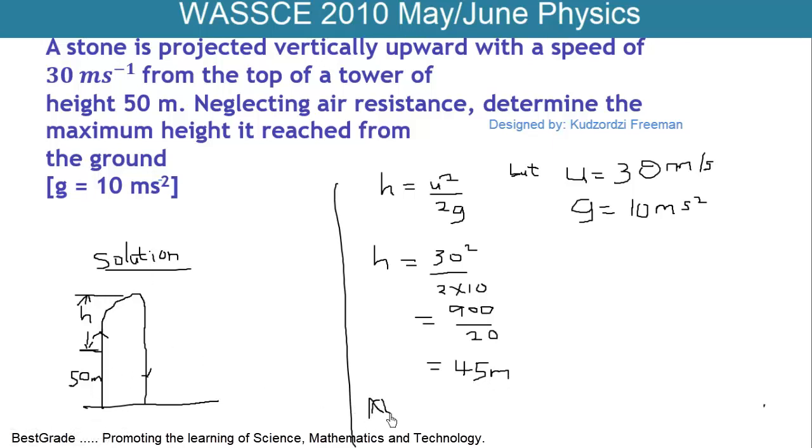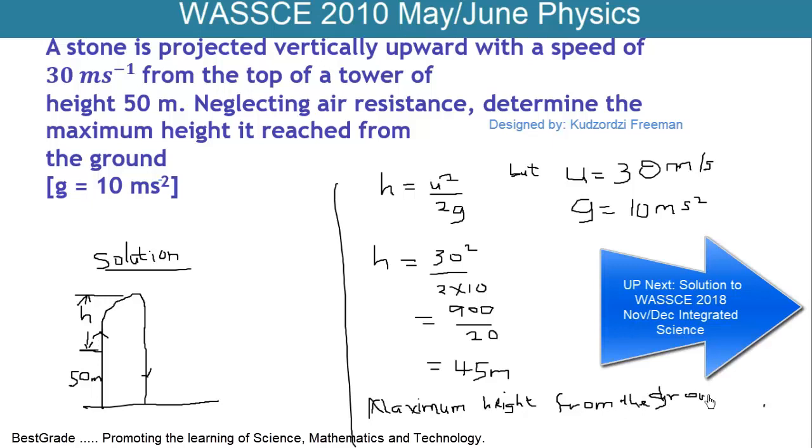So to get the maximum height reached from the ground, you have to add the height of the tower to H. Don't forget to do that.